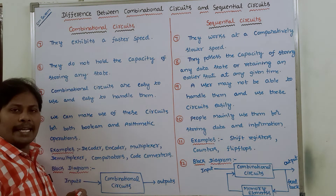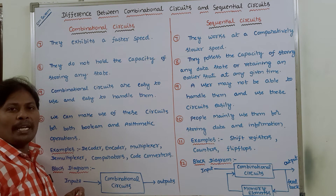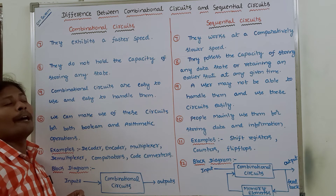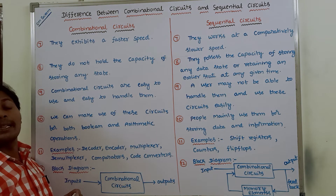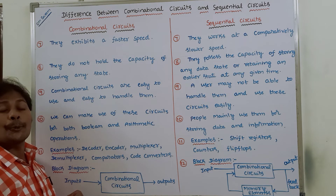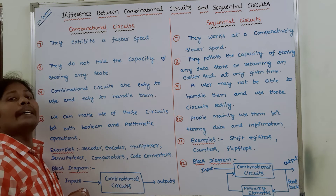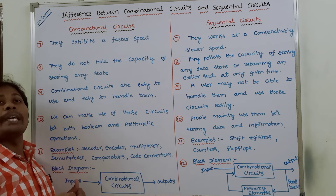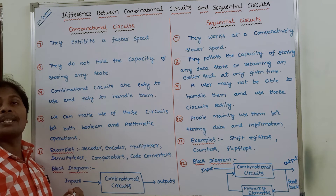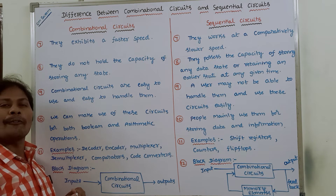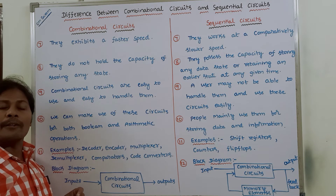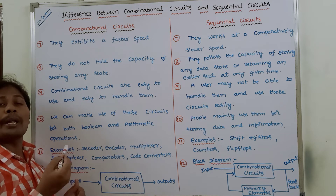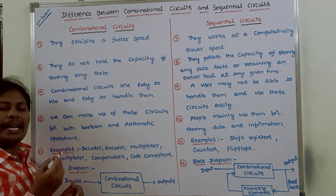Eighth point: combinational circuits do not hold the capability of storing any state. Whereas sequential circuits have the capability of storing any state or retaining an earlier state — both the previous state and the present state can be stored in the memory elements of a sequential circuit.